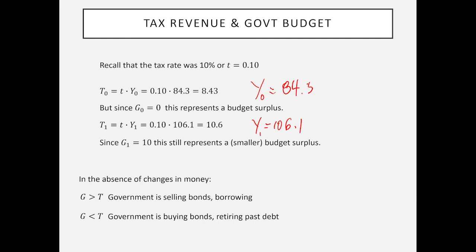We don't have money in this model so we can ignore money in general. But we can say that if government purchases are greater than tax revenues, then the government is selling bonds, borrowing, and there's a government budget deficit. If on the other hand, as in these two cases, we've got a budget surplus, although at time 1 the surplus is smaller, there's a government budget surplus. Be careful about this term deficit and surplus, we're talking specifically about the government budget, not the country as a whole, not foreign trade or anything like that.